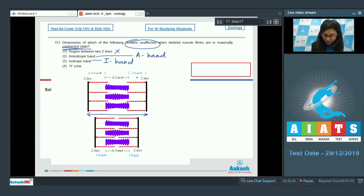Option number three, isotropic band or I band - length of I band also reduces due to overlapping on the A band, so this gets affected and can't be the answer. Option number four, H zone or Henson zone - this also narrows when the overlapping of actin and myosin filament increases. You can see it here, so this also cannot be our answer. The right answer here would be option number two, an isotropic band.